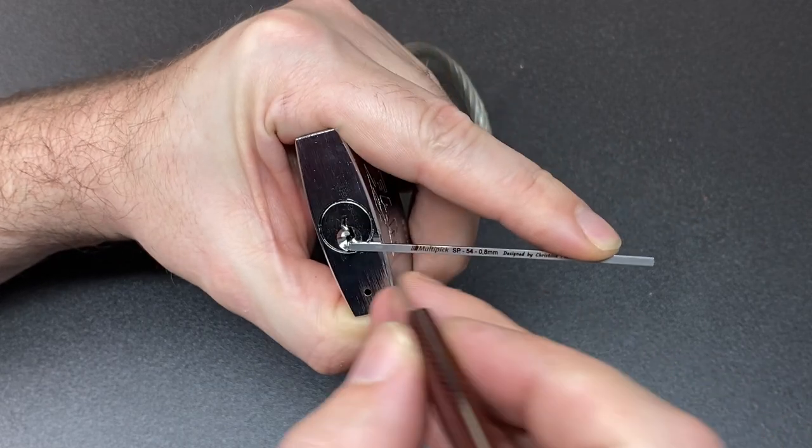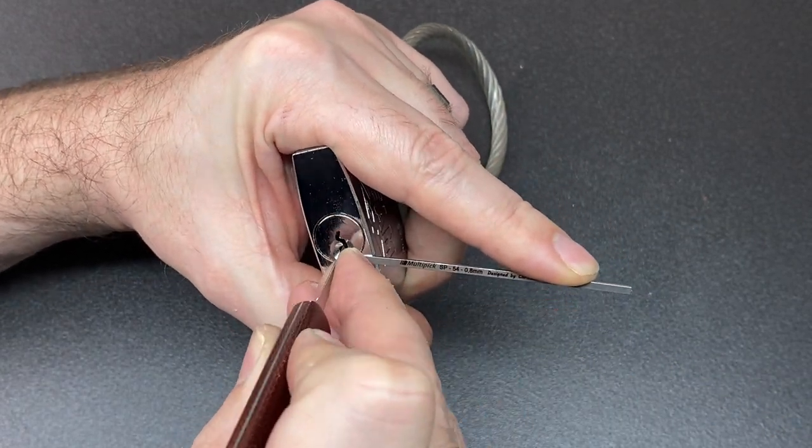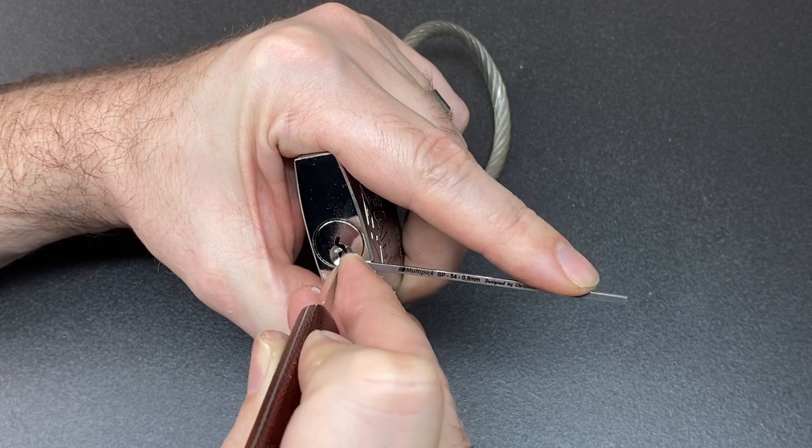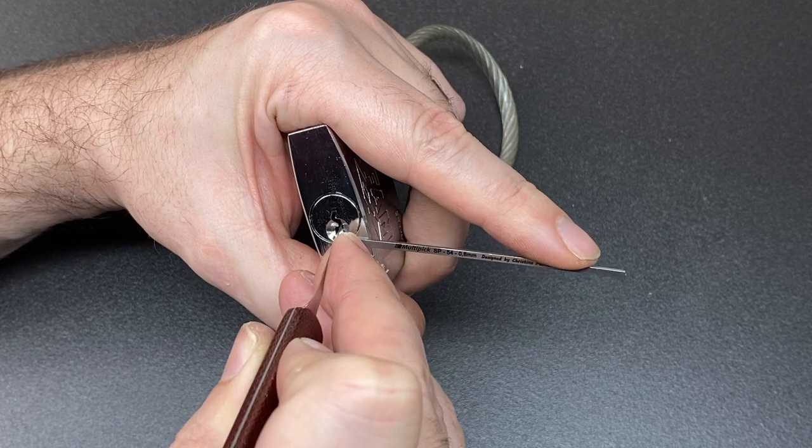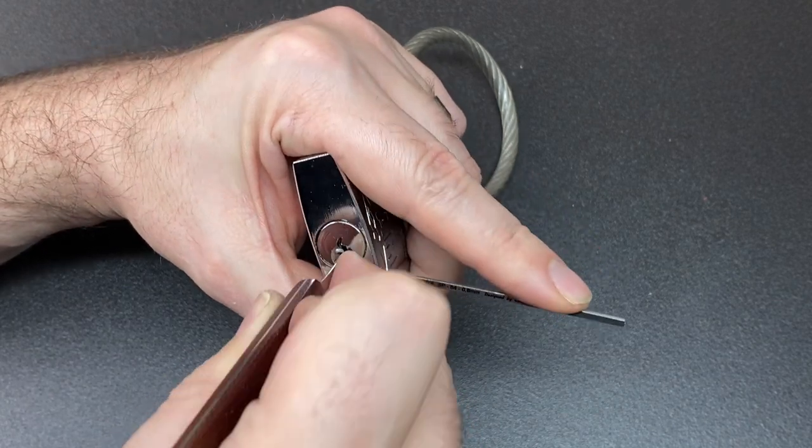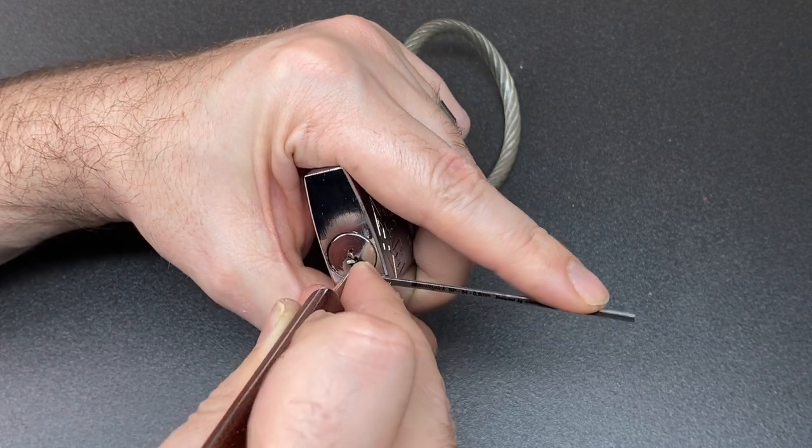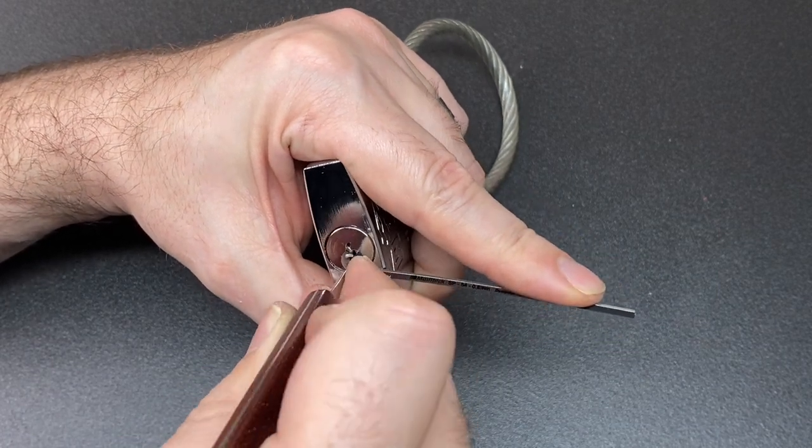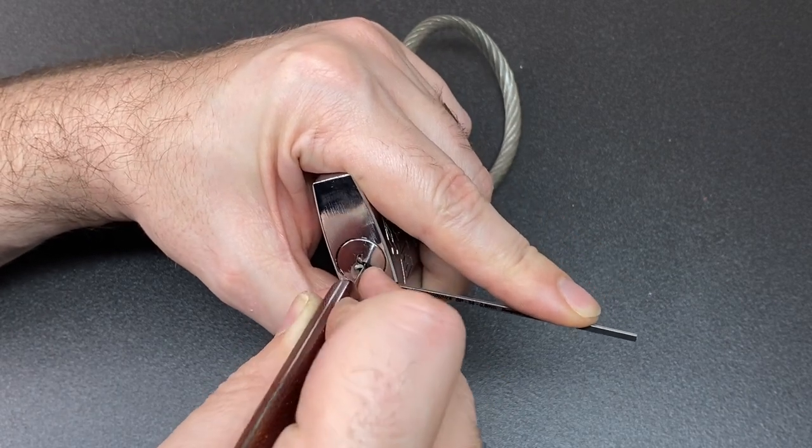So I'm already on pin two there, into a bit of a false set. Pin one here, that feels fine. Pin three, counter-rotation. Pin four, counter-rotation. We might have just dropped a pin. Nope, we seem to be fine.